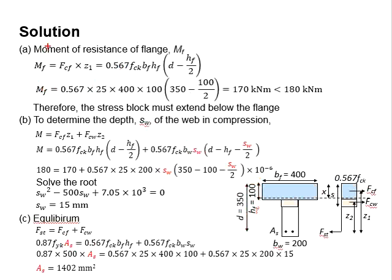The moment capacity of the flange here is determined to be 170 kNm compared with the moment load acting on the section. The moment resistance is less than the load acting on the section. With that, it is concluded that the stress block must extend beyond the flange and some portions of the web are taken to resist the moment as well.